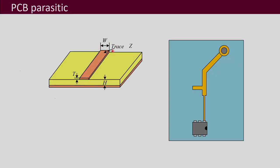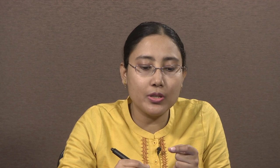Let us look into a very simple part of a PCB — one copper trace. This trace will have a thickness equal to whatever the thickness of the copper layer is. Let us say that thickness is T. The trace will also have a length L and a width W. Being like a strip, it will obviously have its own resistance and also some inductance. So even in such a simple trace there will be parasitic resistance and parasitic inductance.